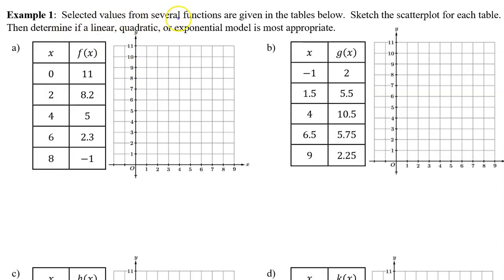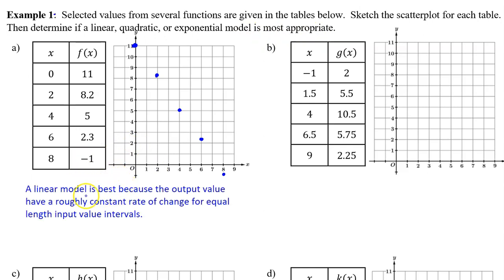Example 1. Selected values from several functions are given in the tables below. Sketch the scatter plot for each table, then determine if a linear, quadratic, or exponential model is appropriate. Here's the scatter plot for part A. I need you to learn how to use College Board vocabulary. You can't just say linear because it's obviously linear. You have to say a linear model is best because the output values have a roughly constant rate of change for equal length input value intervals.